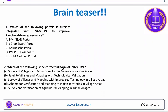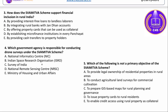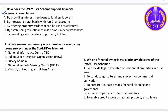At last, I am providing five questions and I want each and everyone attending this session to answer them. Even if you know the answer, just type the answers. Question 1: Which portal is directly integrated with the Swamitwa scheme to improve Panchayat-level governance? Question 2: What is the correct full form of the Swamitwa scheme? Question 3: How does the Swamitwa scheme support financial inclusion in rural India? Question 4: Which government agency is responsible for conducting drone surveys under the Swamitwa scheme? Question 5: Which of the following is not a primary objective of the Swamitwa scheme?